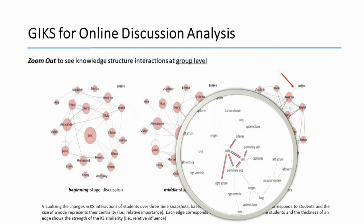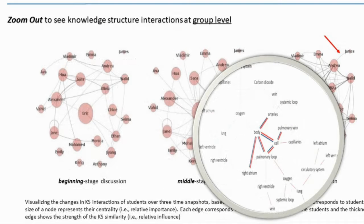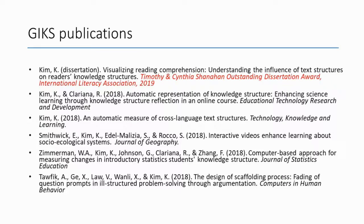We can see whose knowledge structure influences whose, and who is active or less active in the discussion. For example, James didn't seem to be active in the discussion, but according to this network, at the final stage James's knowledge structure was connected to Andrea's a little bit. So we can assume that James and Andrea may have shared some opinion at the end of the discussion. We can then zoom in to get more detailed information about what concepts they shared at that time.